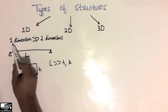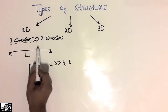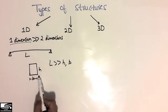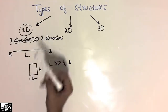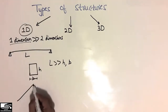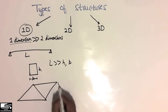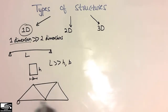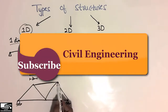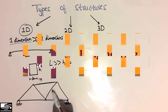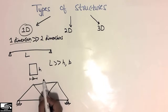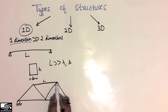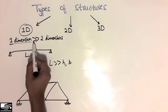We can say that one dimension of this structure — the beam — is greater than the other two dimensions, which are the cross-section of the beam. Similarly, if you consider a truss, we can call it a one-dimensional structure because the length of this truss is larger, while the other two dimensions — the diameter or the thickness of the truss member — are much smaller compared to its length.